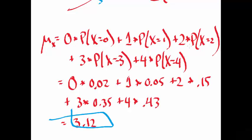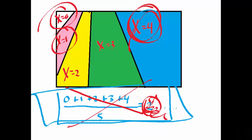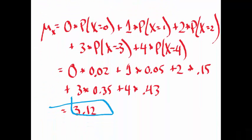Notice the result is different from the simple average. If all probabilities were equally likely at 20%, then the simple average of 2 would have been correct. But your professor is much more likely to have four cups than anything else — four is the mode here. He's very likely to have three or four cups. So that brings us to the mean or expected value of a random variable.